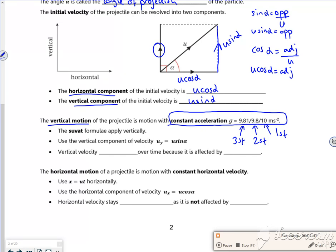So the SUVAT formula applied vertically. I use a vertical component, so my velocity going up is u sine alpha. So the vertical velocity changes over time because it's affected by gravity. As soon as you fire it off at an angle or fire it up, gravity is pushing it back down, so it's affecting the vertical component in the velocity.